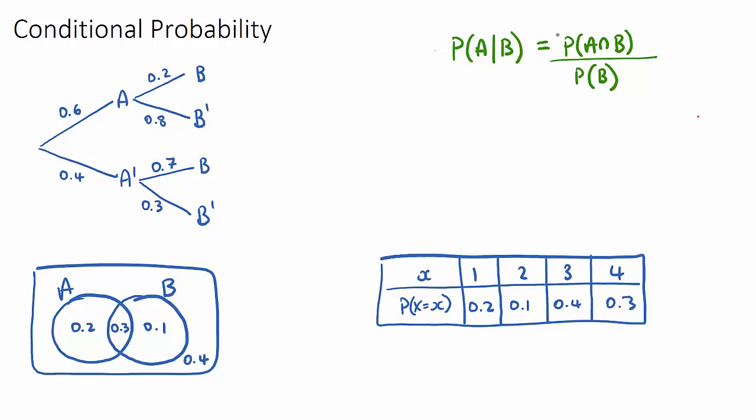This is the formula, you may see it in a slightly different form, but if you ever have something given that something, it's the intersection of the two, divided by the given that component. Now these types of questions appear in a few different ways, and we're going to do three quick examples: a tree diagram, Venn diagram, and a table of probabilities.